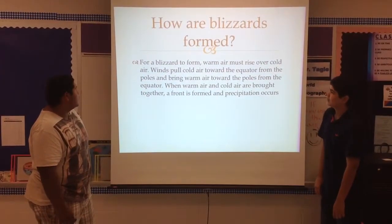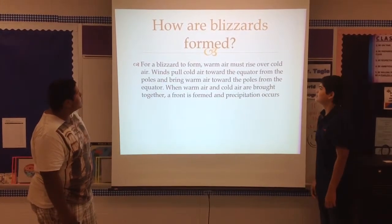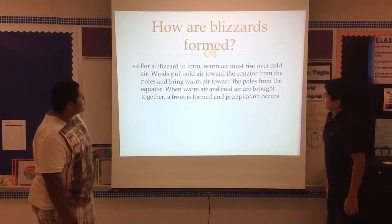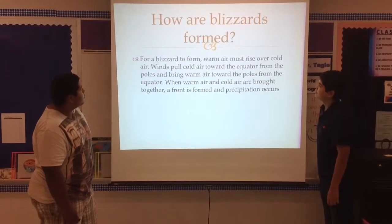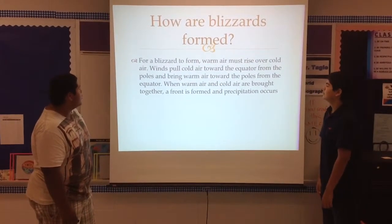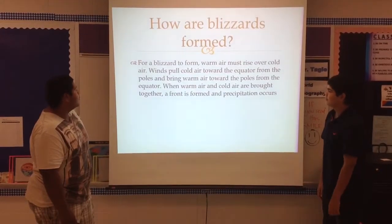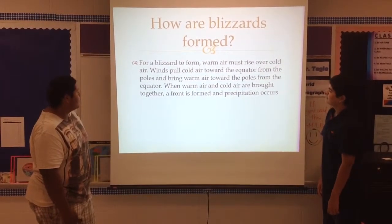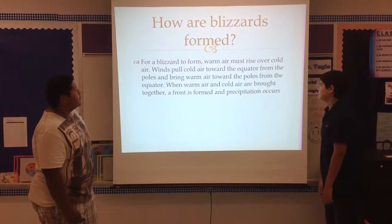How are blizzards formed? For a blizzard to form, warmer air must rise over colder air. Winds push colder air towards the equator from the poles and bring warmer air towards the poles from the equator. When warmer and colder air are brought together, a front is formed and precipitation occurs.